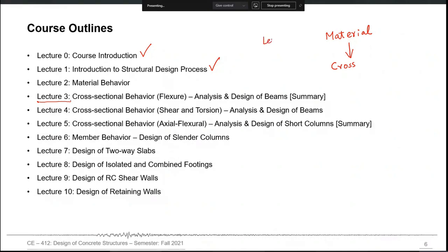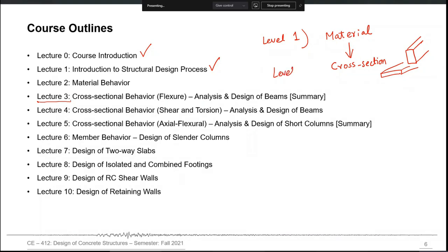Material behavior manifests at the cross-section level. Every structural element — beams, slabs, walls, shear walls — will have a cross-section. Whatever material properties you have, they manifest at cross-section level. Cross-sectional properties depend on cross-sectional shape and material properties. So cross-section is Level 2, with material being Level 1.